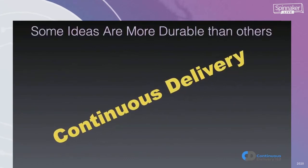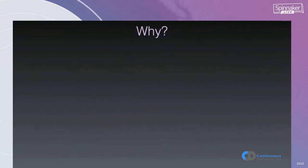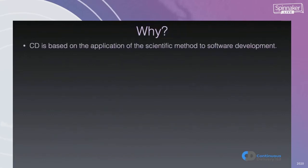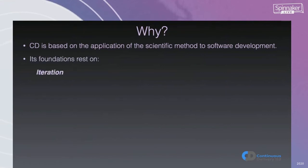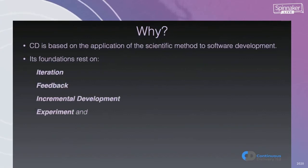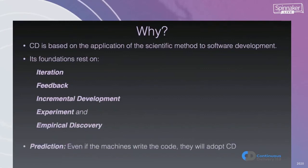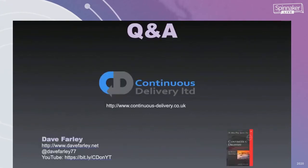My name is associated with continuous delivery — I was one of the authors of the continuous delivery book. I believe that continuous delivery is probably in this space, because I think it's the application of a lot of the ideas I've already talked about and will be a long-lasting idea. Continuous delivery is based on the application of the scientific method to software development. It's about establishing fast, efficient feedback loops so that we can learn. It rests on iteration, feedback, incremental development, experiment, and empirical discovery. So my prediction is: even if the machines are writing the code, they're going to adopt continuous delivery.